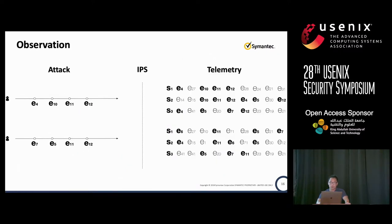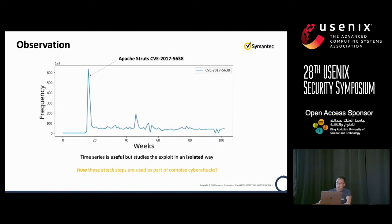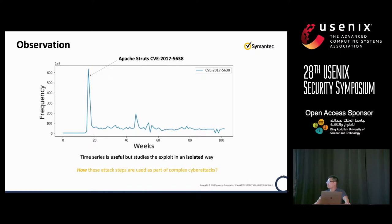What we can do is look at the telemetry data. Here is our observation: to the left-hand side is the attacker — something we won't be able to get from the point of view of ground truth. In the middle, you have the IPS system protecting customers. Towards the right-hand side, you have the telemetry data — that's all we get. Usually we leverage time series based on frequencies, so for the same exploit we can plot how it is being used in the wild. It is useful, but it only shows the exploit in an isolated way — how these attacks are used as part of complex cyber attacks, you won't get that from this picture.